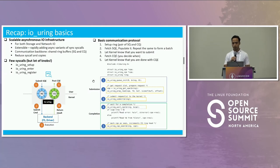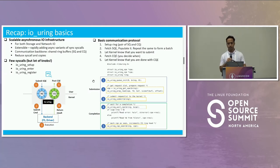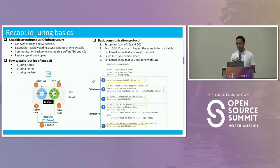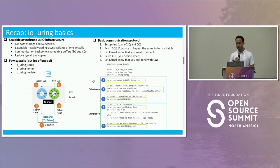If you look at the communication protocol: the application starts by setting up a ring, which gives you a submission queue ring buffer and also a completion queue. Within this ring, you would want to submit your command. You fetch an SQE, you populate it with your command-specific operation — it could be read, write, or anything else.